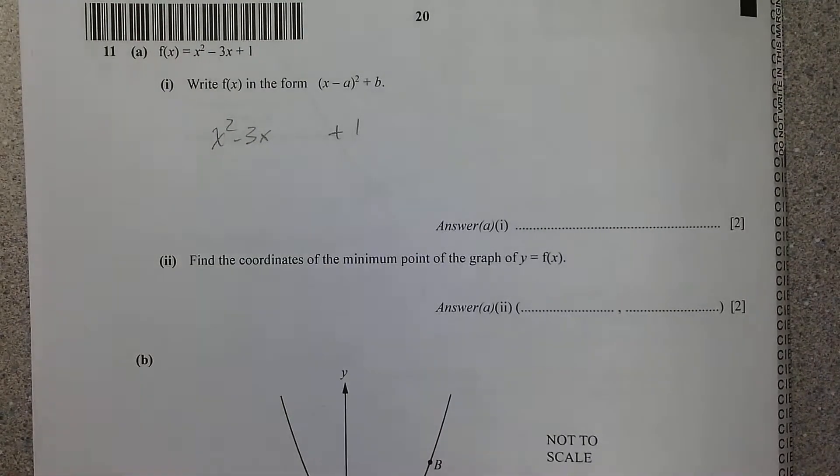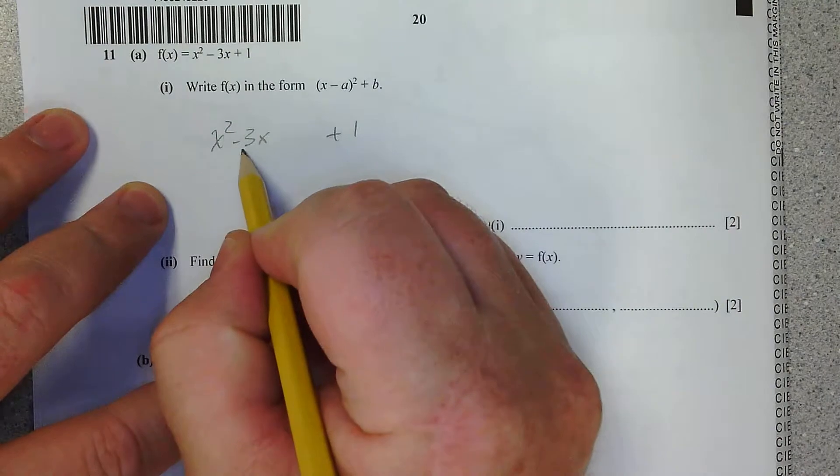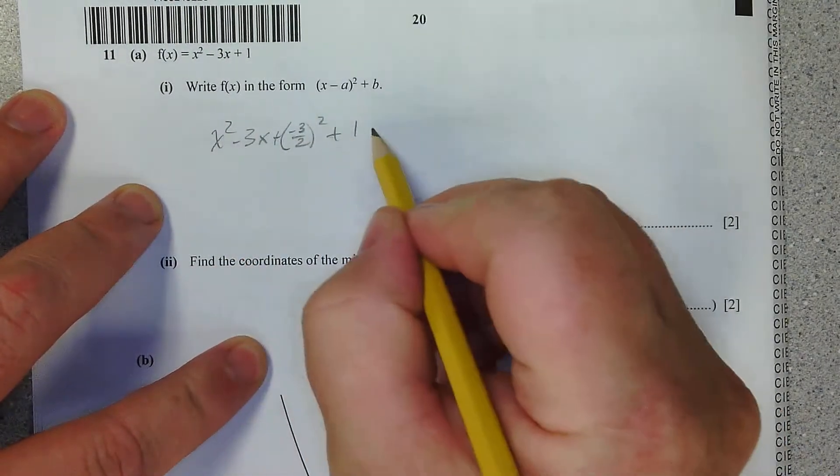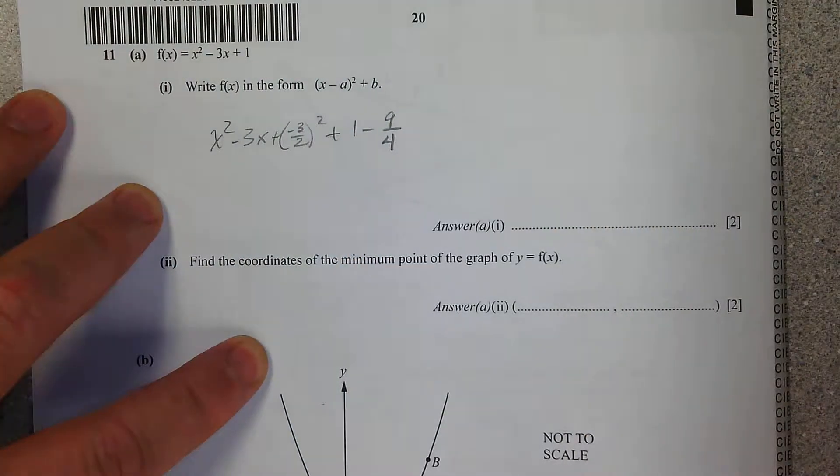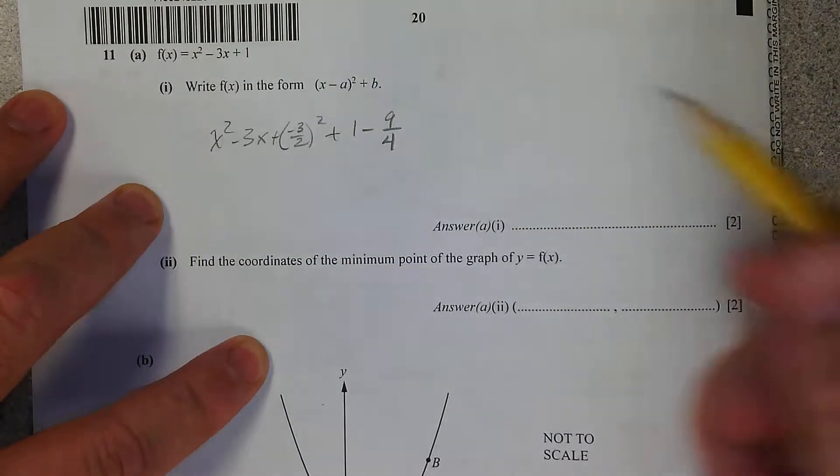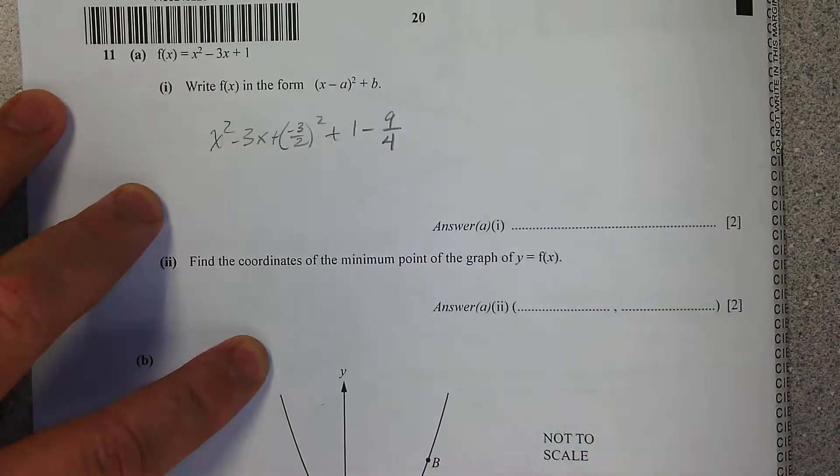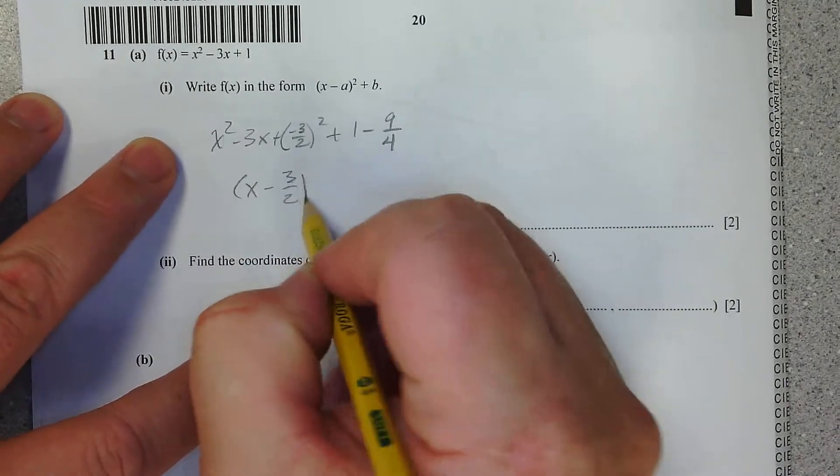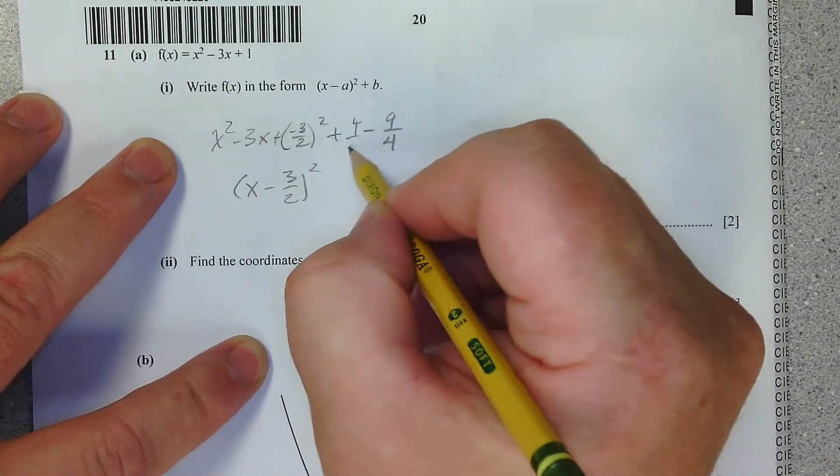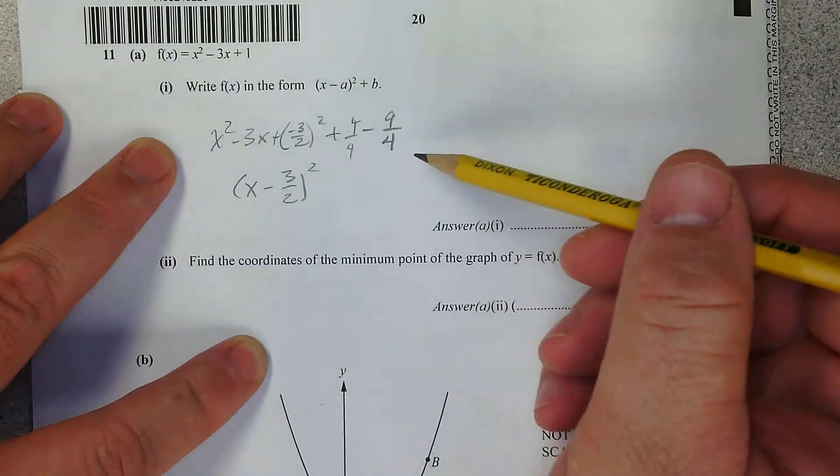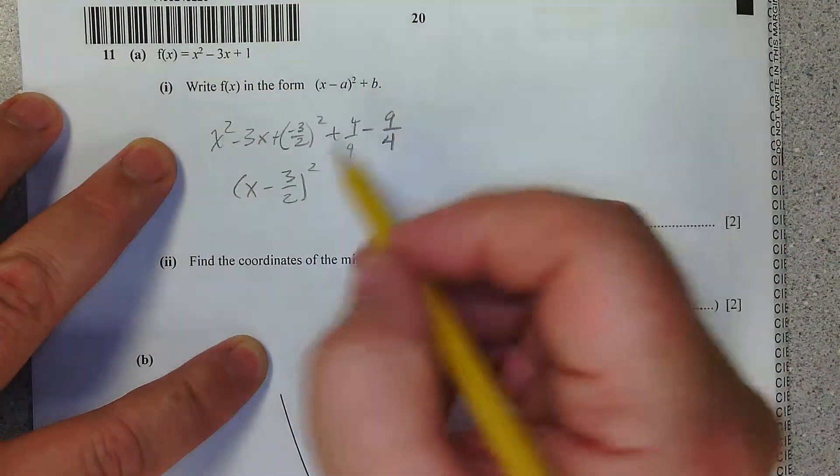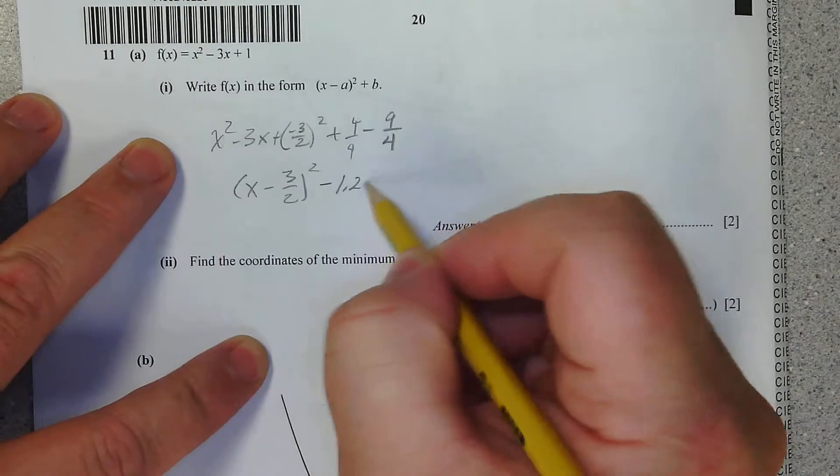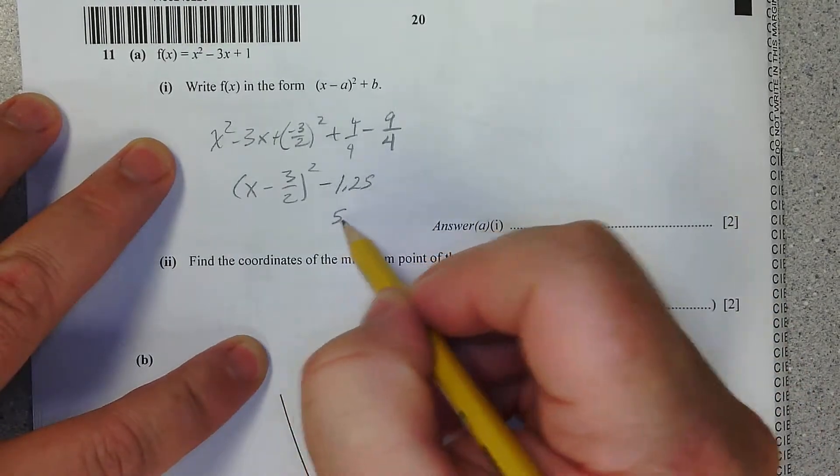We have to take half of b and square it and add it and subtract it. Check that out. Look at that hotness. So now, x minus 3 over 2 squared, and this is 4 over 4 and 4 over 4. It was a plus 1 and a minus 1. So that's going to be 5 over 4 minus 5 over 4, which is 1.25.